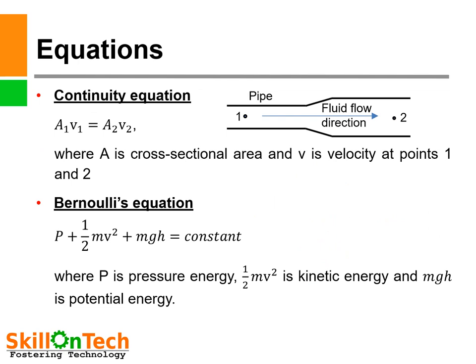Now let us understand how pressure rises at the discharge of a pump using simple equations based on the Bernoulli principle. The continuity equation is: a1v1 = a2v2, where a1 is the inlet area, v1 is the initial velocity, a2 is the discharge area, and v2 is the discharge velocity — here 'a' denotes cross-sectional area and 'v' is velocity. The Bernoulli energy equation states that the total energy in the liquid — P + ½mv² + mgh — equals a constant, where P is pressure energy, ½mv² is kinetic energy, and mgh is potential energy.